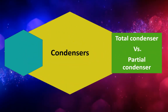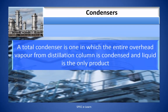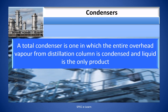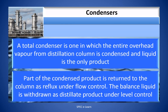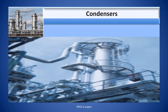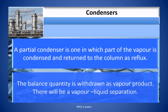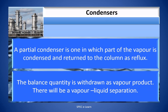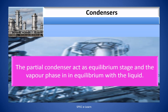A total condenser is one in which the entire overhead vapor from a distillation column is condensed and liquid is the only product. Part of the condensed product is returned to the column as reflux under flow control, and the balance is withdrawn as a distillate product under level control. In a total condenser, the vapor and liquid phase composition is the same. A partial condenser is one in which part of the vapor is condensed and returned to the column as reflux, with the balance withdrawn as vapor product — involving vapor-liquid separation. The partial condenser acts as an equilibrium stage where the vapor phase is in equilibrium with the liquid.